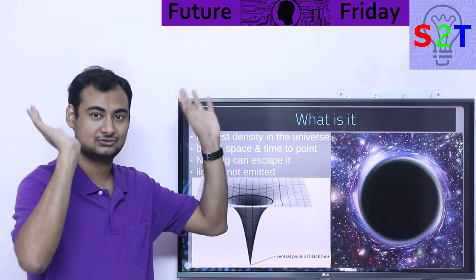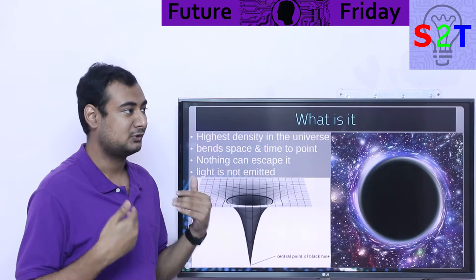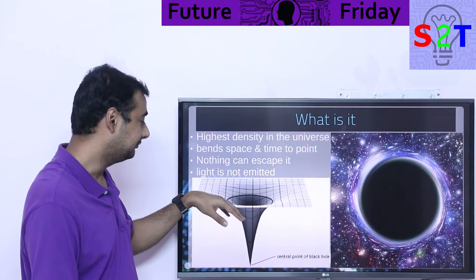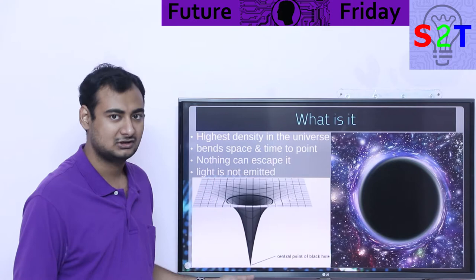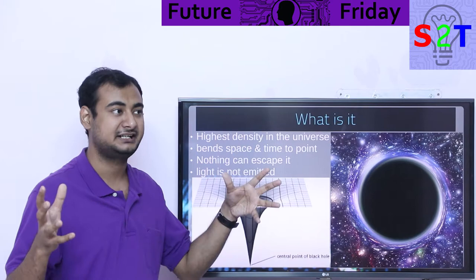That's why nothing can escape it. Even a neutron star has escape velocity, but a black hole collapses to a point where even light speed is not fast enough. If you fire a torch from inside it, the light can't escape. You can orbit it if you're far enough, like outside the event horizon. But if you come close, it breaks every single known law of physics.